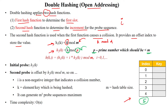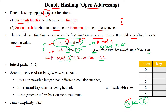For example, if the table size is 5, the previous prime number less than 5 is 3, so we use k mod 3 as the second hash function. The probe sequence formula is: h(k, i) = h1(k) + i × h2(k), where i ranges from 0 to m−1. We use two hash functions to find the free slot if the first hash function is unable to find one.